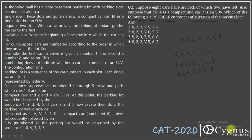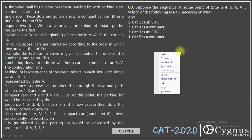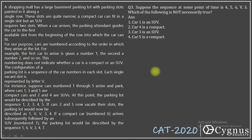I hope this is clear to everyone. Let's look at the next question. Suppose the sequence at some point of time is: 4, 5, 6, V, 3. Then which of the following is not necessarily true?